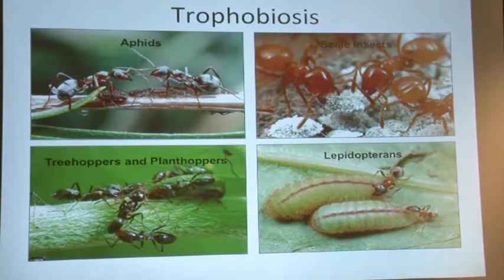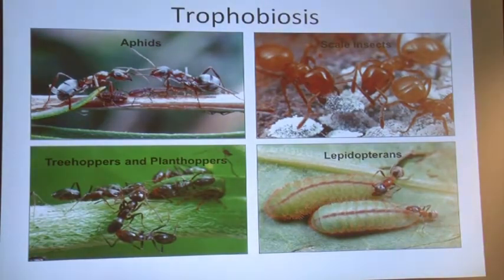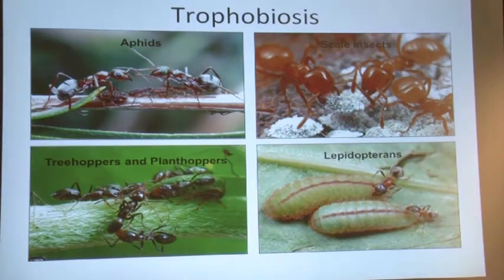One of the biggest challenges hemipterans face is expelling all this excess fluid. Having honeydew sticking around becomes problematic because it invites fungi or molds to infect the insect and can kill it. One interesting way they've come up with getting rid of honeydew is by associating with ants — having the ants gather that honeydew, which then serves as the food reward in these associations.